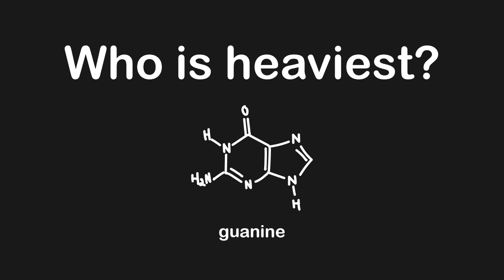Now that we've seen how to keep the structures straight, let's think about size and who's going to be the heaviest. If we think about our mnemonics — 'pure as gold' and 'cut the pie' — gold is heavy, so that tells us something about who will be heavy. And 'cut the pie' means we cut something, so our pyrimidines must be cut, or smaller. Therefore, our heaviest has to be one of the purines.